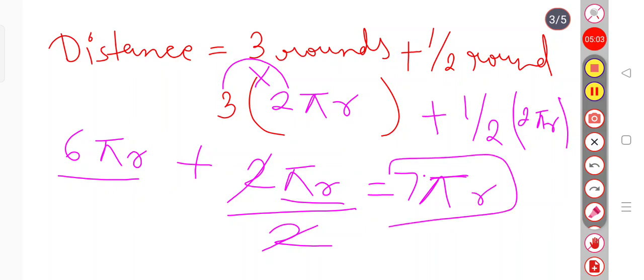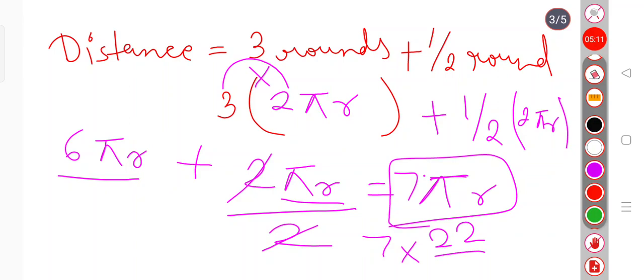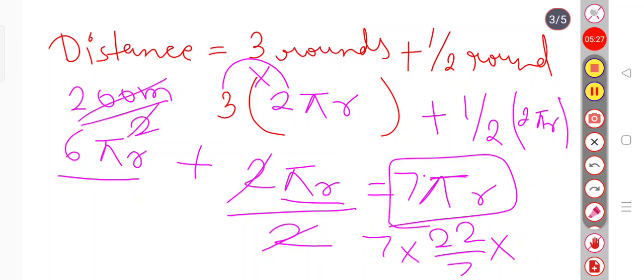Now we can put values in this. R means radius, and we know diameter, so diameter divided by 2 is radius. Our diameter was 200 meters. If I take half, I will get 100. So radius is 100 meters. Now just solve this, you will get 2,200 meters. So this is our distance.